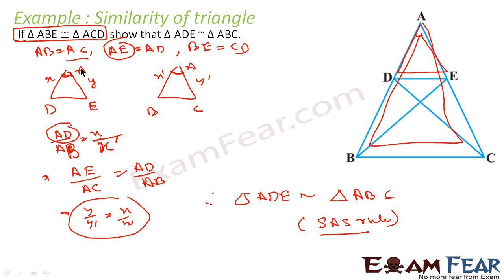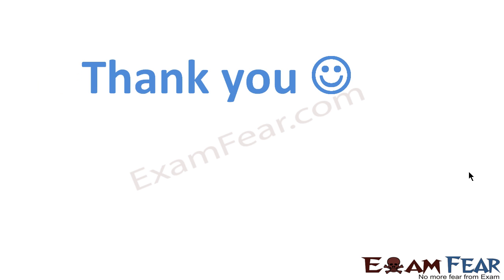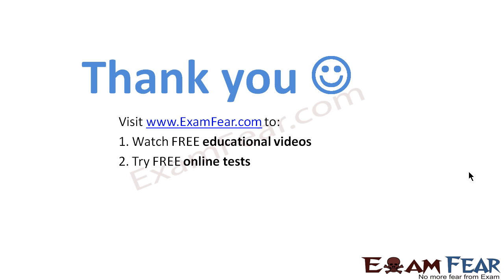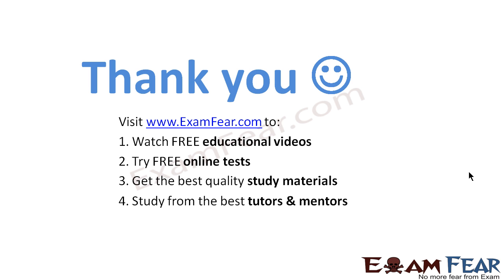We drew triangle ADE and triangle ABC and applied SAS similarity. Please note: if it is ADE in the anticlockwise direction, take ABC also in the anticlockwise direction — don't change the order, otherwise you'll get different answers. The order must be the same: ADE and ABC. Thank you, visit examfear.com to watch free educational videos.